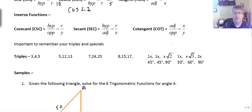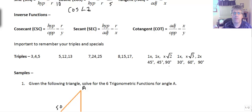It will be important for you to know and remember your Pythagorean triples and your special triangles. Know the 3-4-5, the 5-12-13, the 7-24-25, and the 8-15-17. And for your specials: the 45-45-90, which has sides x, x, and x√2; and the 30-60-90, which has sides x, x√3, and 2x.